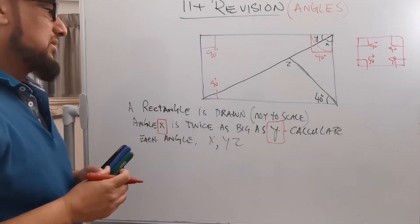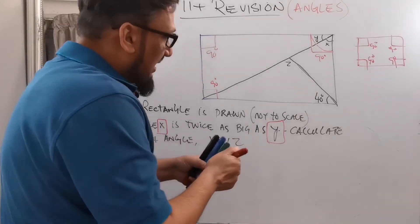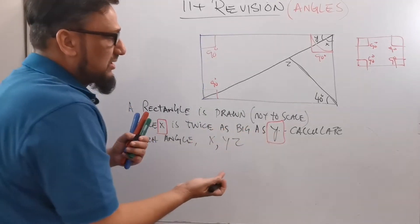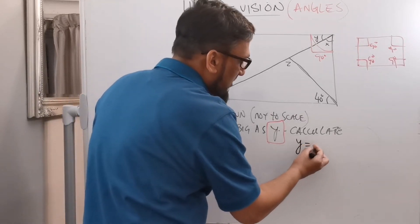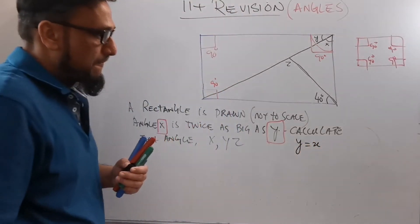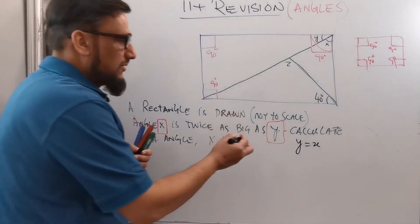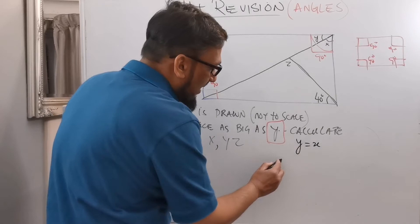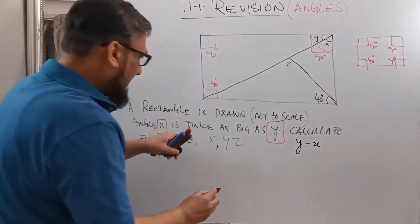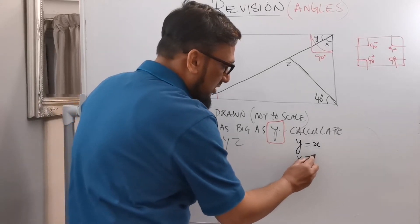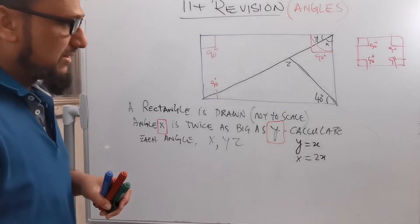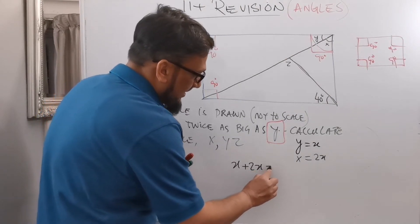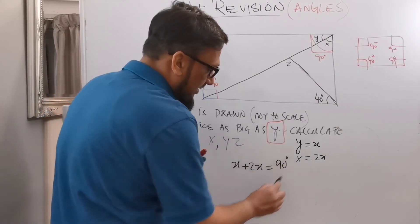Now we can work out the equation. If angle x is twice as big as y, I'll let y equal x and angle x equal 2x. So the equation is: x plus 2x equals 90 degrees. Is that right? Very simple.